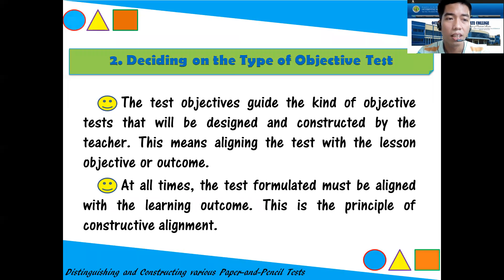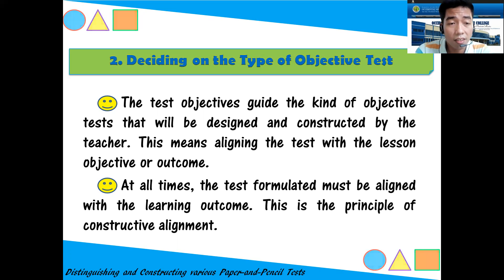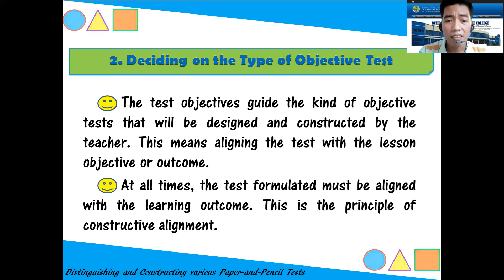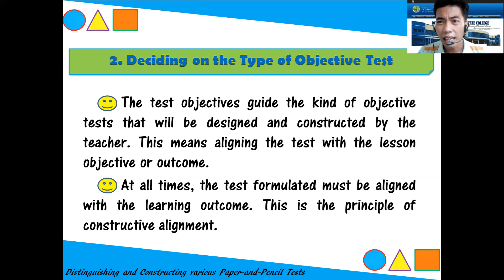The next step is to decide on the type of objective test. The test objectives guide which kind of test will be designed. This means aligning the test with the lesson objectives. Whatever your lesson objectives are, your test items must be aligned with them. Do not give exams on things you have not taught. When you become teachers, do not repeat that mistake.